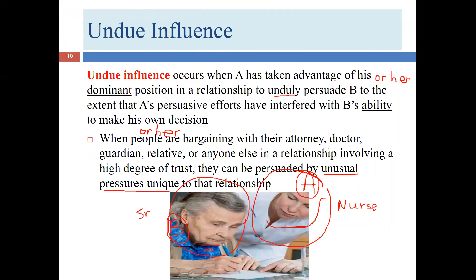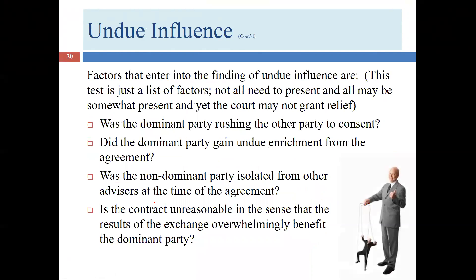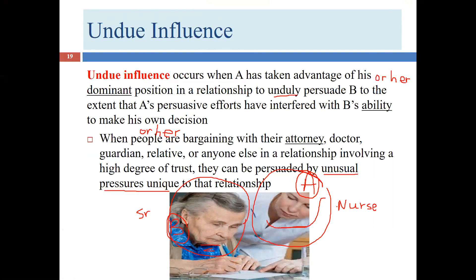If Nurse were to say, 'Senior, your son or daughter is paying me $10 an hour, but if you want dinner tonight, you need to pay me $20 more,' that would be a situation where Nurse is using undue influence — Senior wants dinner and feels she has no choice. We'd also have a pre-existing duty issue, since feeding Senior is part of Nurse's job responsibility.